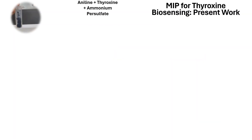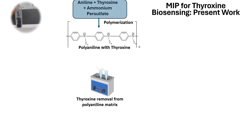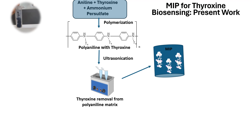In our study, we synthesized a molecular imprinted polymer for thyroxine. In this process, we mixed thyroxine with aniline to synthesize polyaniline containing thyroxine, and we removed thyroxine from the polyaniline matrix to generate the cavities.